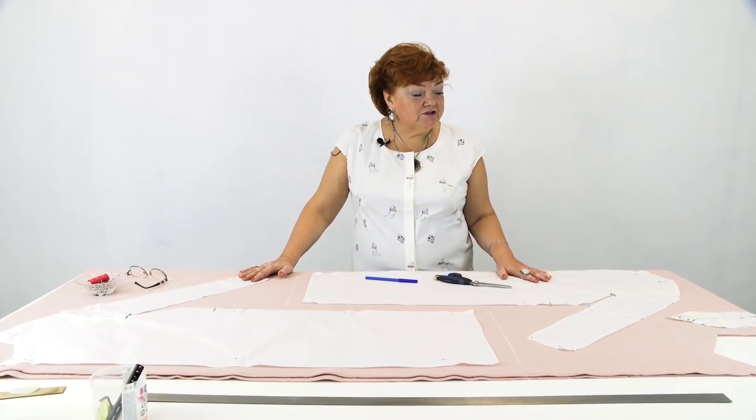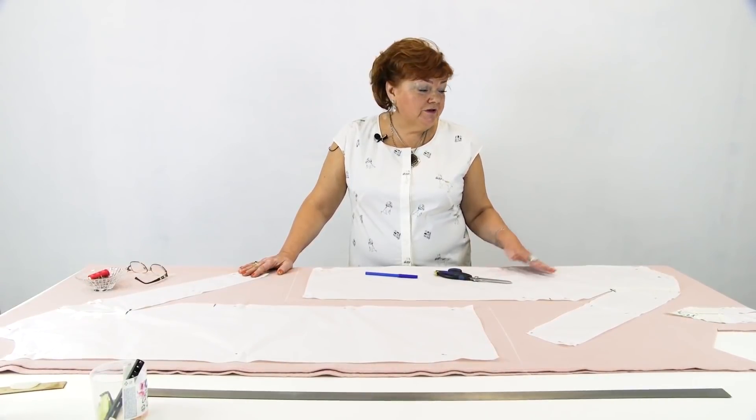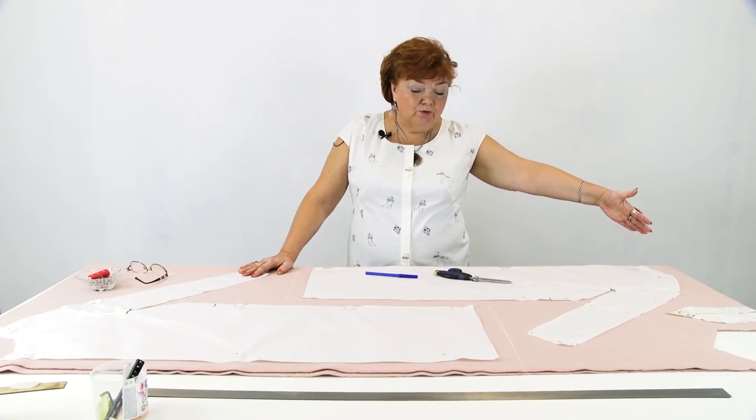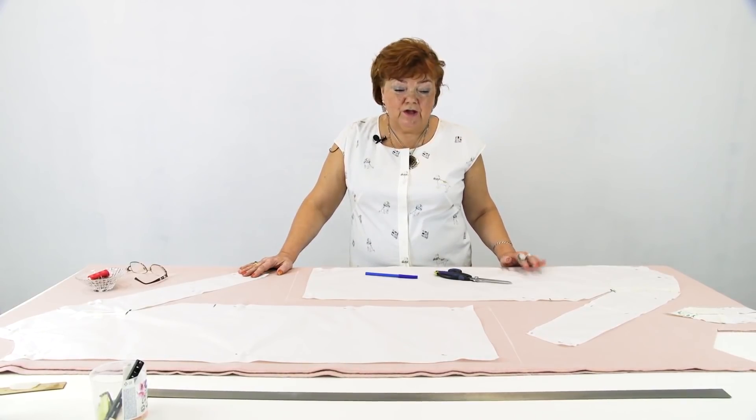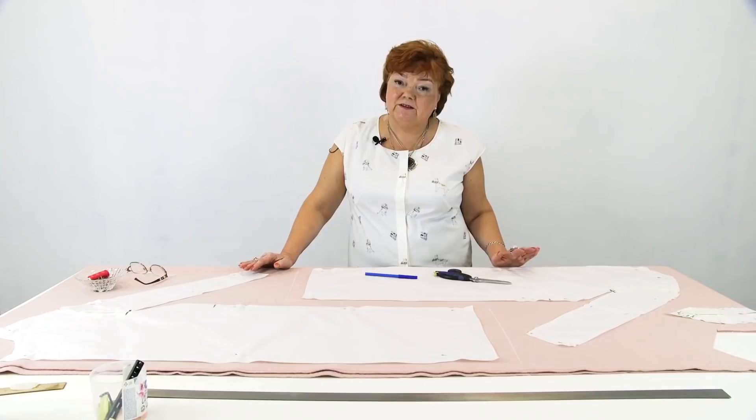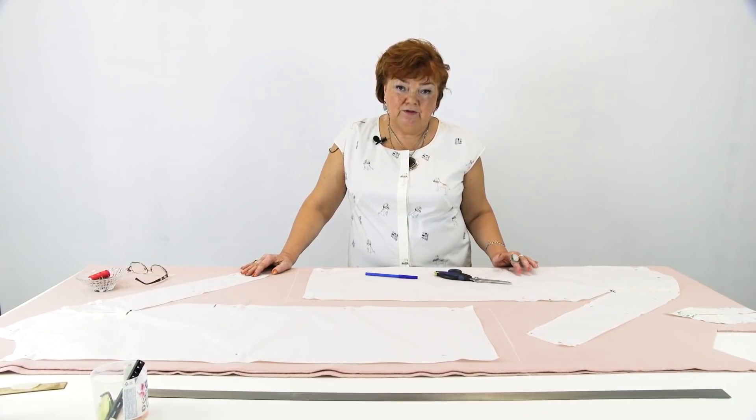Last time I showed you how to make a pattern for the coat with dolman sleeves and gussets. I laid the pattern on the fabric this way in order to have enough fabric for the facings and lining. I will show and tell you everything.